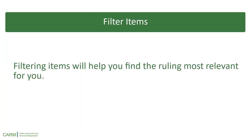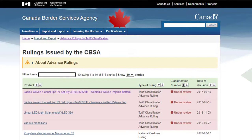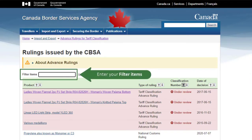Next, let's learn how to filter items in a published ruling. There are many published rulings available, so filtering will help you find the ones most relevant for you. Note the filter items search bar, and click the field to enter your search term.